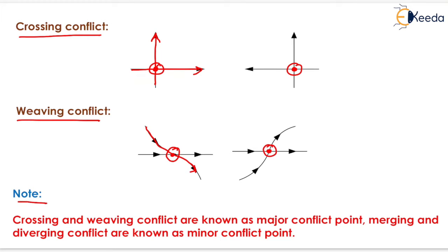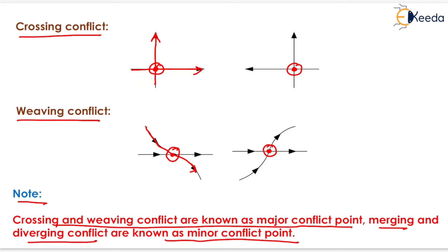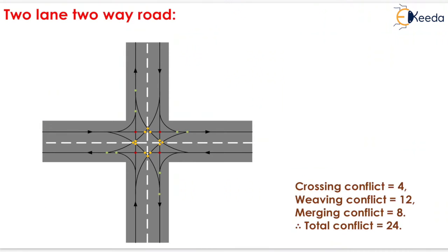Note that crossing and weaving conflicts are known as major conflict points. Merging and diverging conflicts are known as minor conflict points. This topic is very important from the GATE exam point of view, as GATE 2019 had asked a question from this topic.